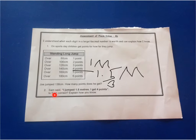Sam said, I jumped 1.5 metres. I get four points. Is Sam correct? Explain how you know.